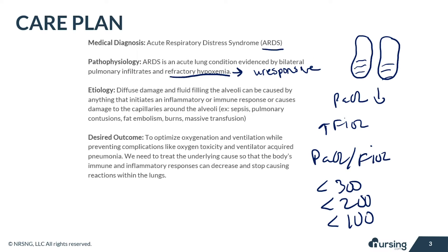Diffuse damage and fluid filling the alveoli can be caused by anything that initiates an inflammatory or immune response that damages the capillaries around the alveoli. Examples include sepsis, pulmonary contusions, burns, fat embolisms, and massive transfusions of fluid or blood.